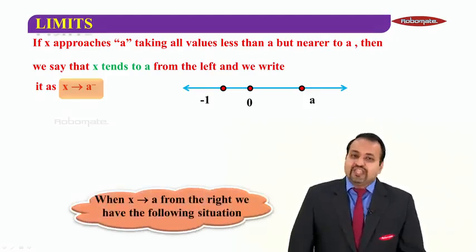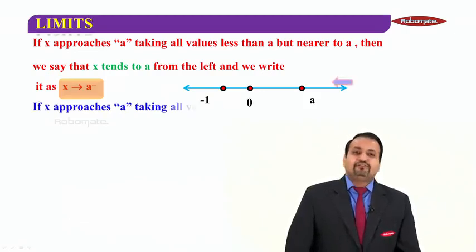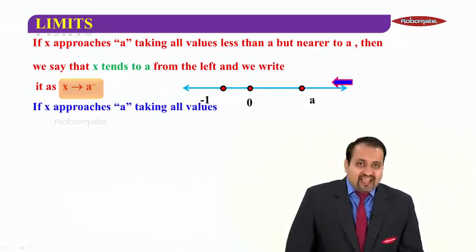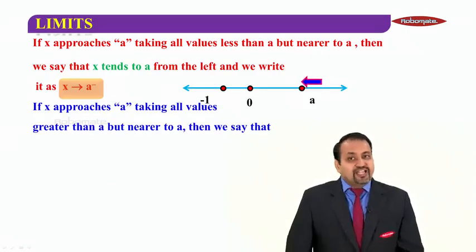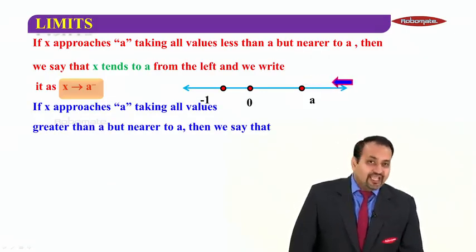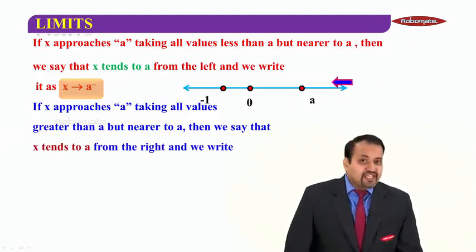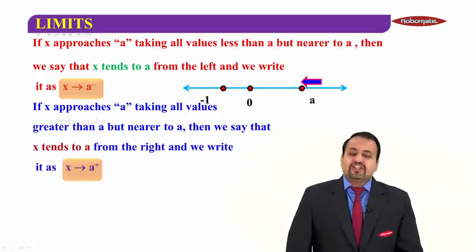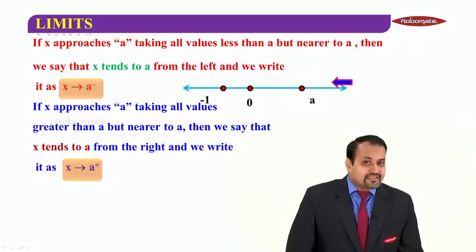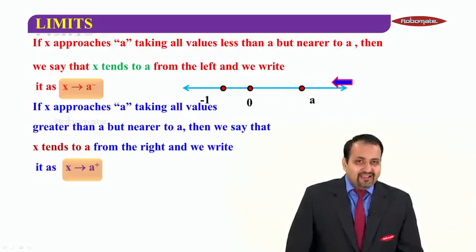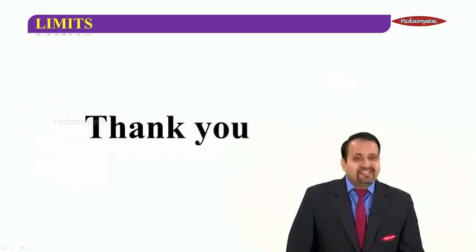Similarly, when X tends to A from the right, we have the following situation. If X approaches A, taking all the values greater than A, but nearer to A, then we say that X tends to A from the right and we write it as X tending to A plus. We write small plus sign over A. This is the notation that you need to remember. Thank you.